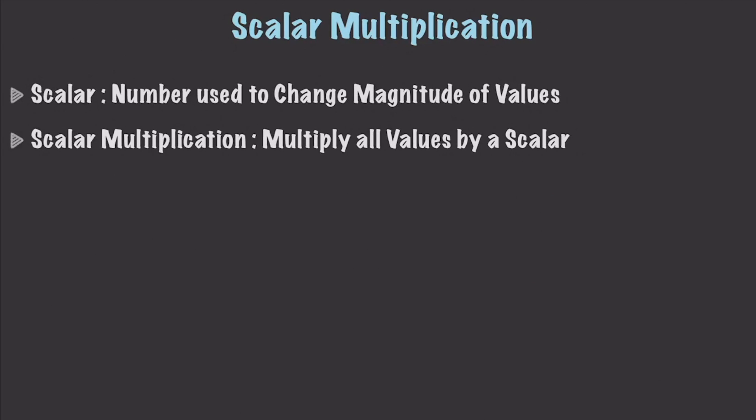A scalar is just a number that is used to change the magnitude of values — a number we use to multiply times individual elements inside our matrix. Scalar multiplication is simply multiplying all values in a matrix by a scalar. So for example, if you had matrix A equal to 1, 2, 3, and 4, then 2A — multiplying times 2 — gives you values of 2, 4, 6, and 8.